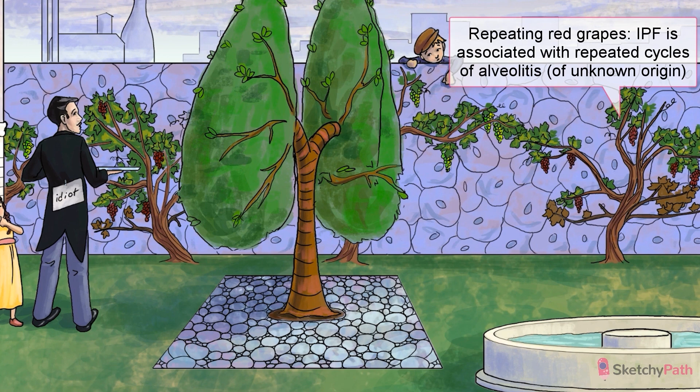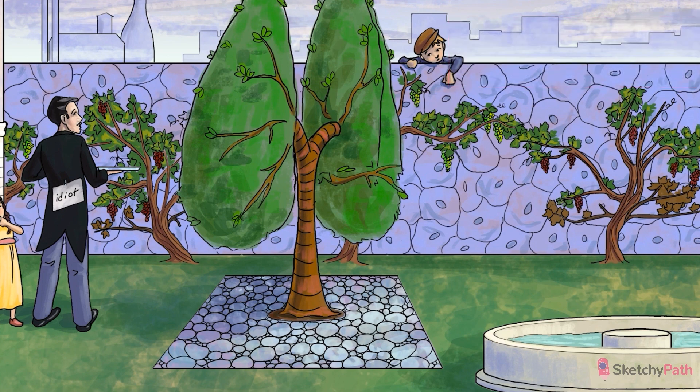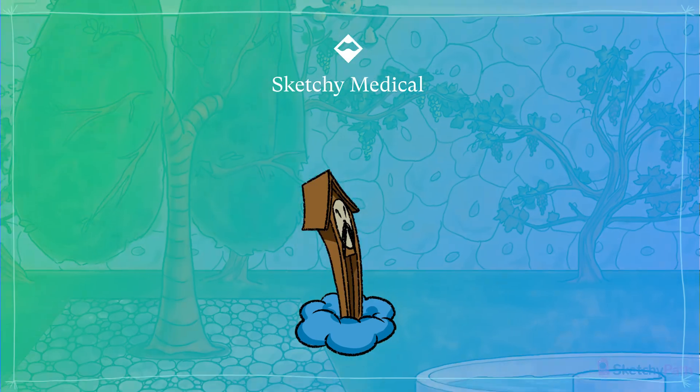Cryptogenic, meaning of unknown origin; fibrosis, as in the characteristic patchy but progressive interstitial fibrosis; and alveolitis, meaning that something is causing repeated cycles of inflammation to the alveoli. See those grape bunches in the back? They kind of look like the alveolar airspaces of the lung. Notice too that we've scattered a few especially red and inflamed-looking bunches in there as well to depict repeated cycles of alveolitis.